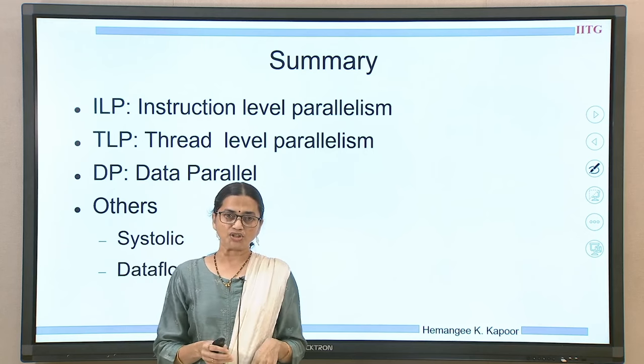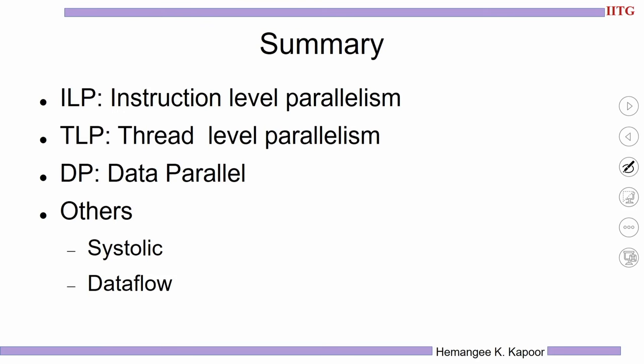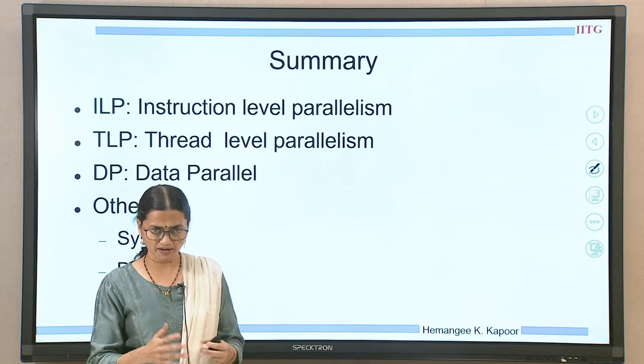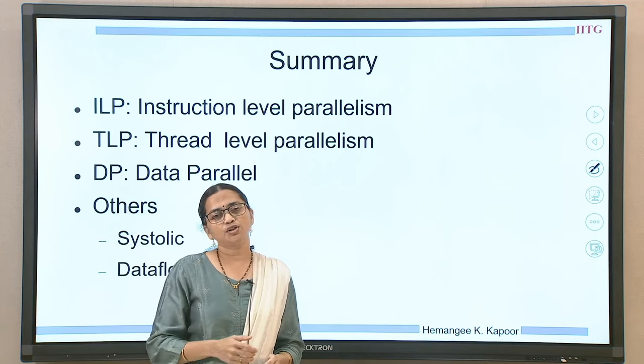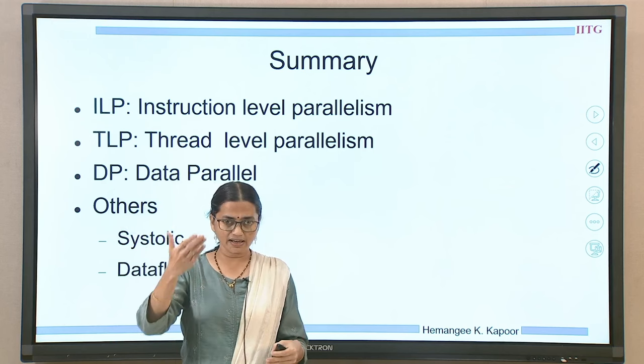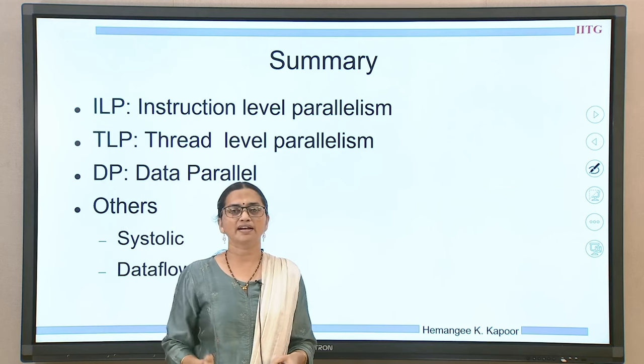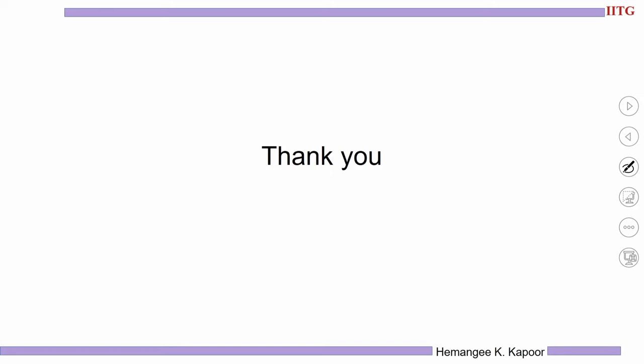To summarize this lecture: we discussed instruction level parallelism, thread level parallelism, and data parallelism where we operate on different data items with the same type of operation. Other types of architectures that exist are systolic and data flow, which we won't cover, but interested students can read the literature. Overall, this is the taxonomy of parallel architectures.